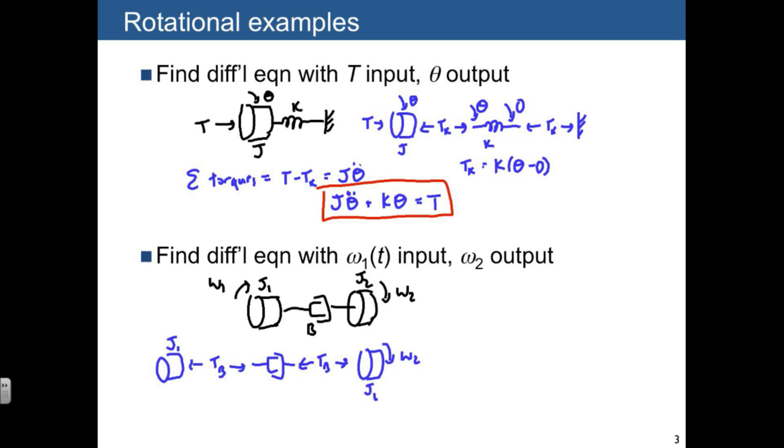The element law is Tb is equal to B times omega 1 minus omega 2. And notice that our first displacement omega 1 was actually prescribed.